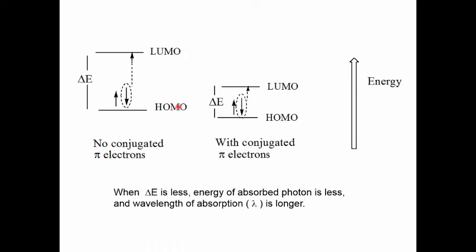In this diagram, we show the contrast between a molecule whose pi electrons are not conjugated and a molecule whose pi electrons are conjugated. In the molecule whose electrons are not conjugated, there's a fairly large difference in the energy between the HOMO level and the LUMO level — the delta E is a fairly large value. But when the pi electrons are conjugated, the difference in energy between HOMO and LUMO is less. The delta E is less. When the gap between HOMO and LUMO is less, the energy of the photon is less, and the wavelength of the light absorbed is longer.